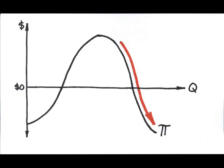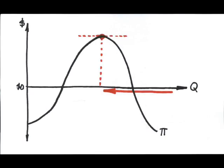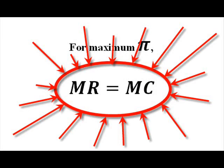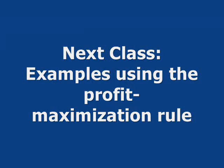In this case, you would want to cut back on your output until marginal revenue equals marginal cost. In the end, marginal revenue equals marginal cost is always the profit maximizing rule, no matter what the market structure. Next class, we'll do some problems using this profit maximizing rule.